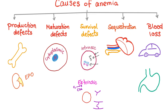Sequestration occurs only in the spleen, where hypersplenism — increased spleen function — brutally damages our red blood cells. This can occur in portal hypertension: the splenic vein drains into the portal vein, so portal hypertension causes blood to back up and accumulate in the spleen, leading to hypersplenism and splenic sequestration.